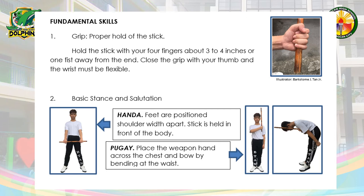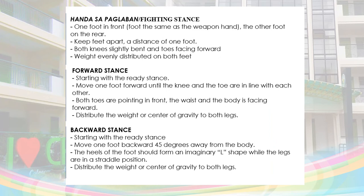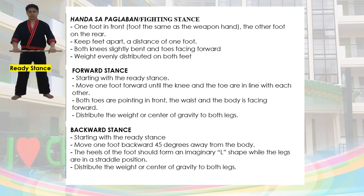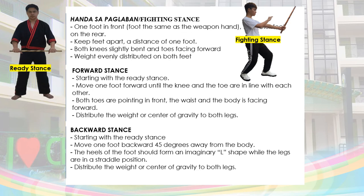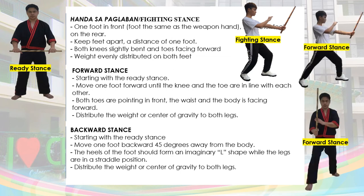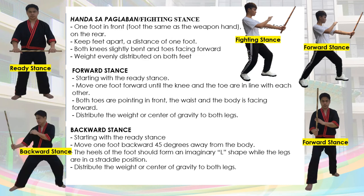Number 2 is Salutation. For 'handa,' feet are positioned shoulder-width apart and the stick is held in front of the body. For 'pugay,' place the weapon hand across the chest and bow by bending at the waist. These are the different basic stances in Arnis. First is the ready stance. Next is the fighting stance. Then forward stance, shown in both side view and front view. And the last one is the backward stance.